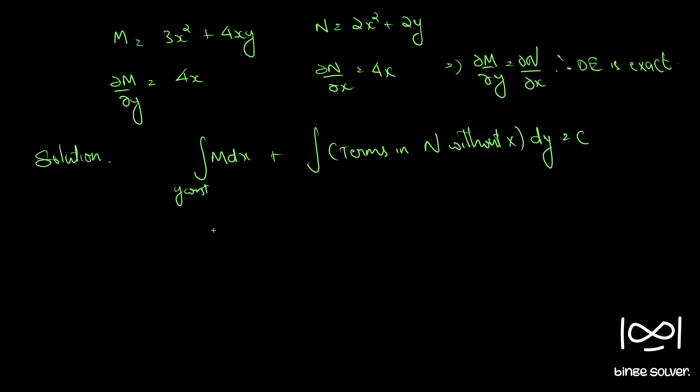So integral M dx becomes integral (3x² + 4xy) dx plus integral of terms in N without x, which is 2y dy, equals c.